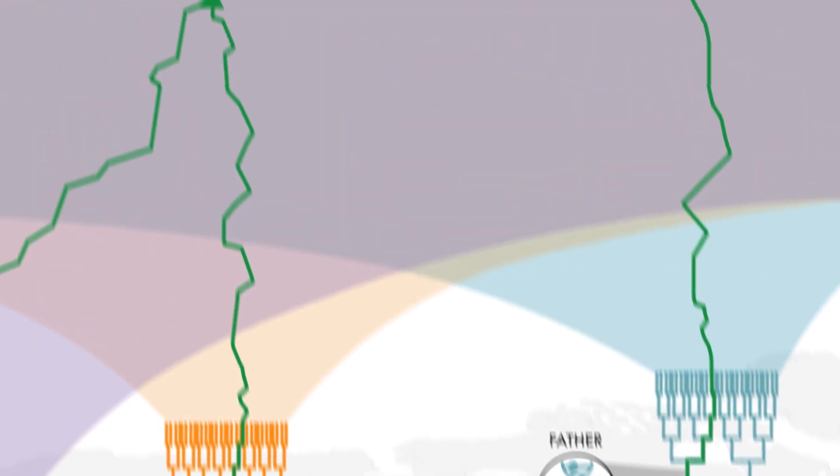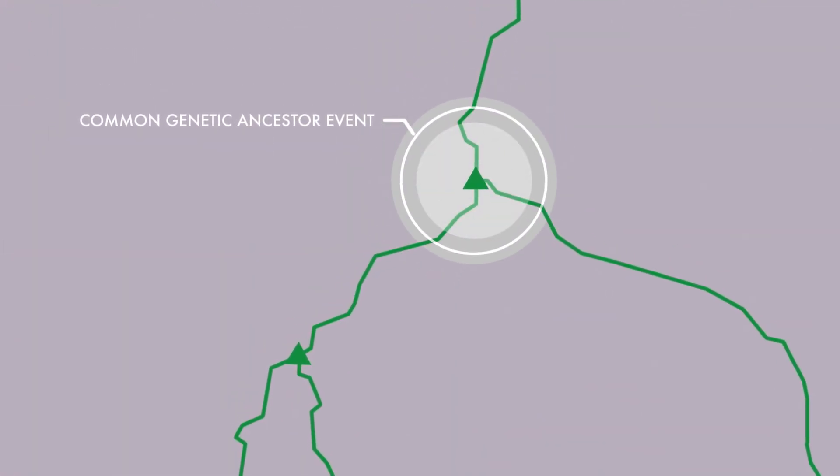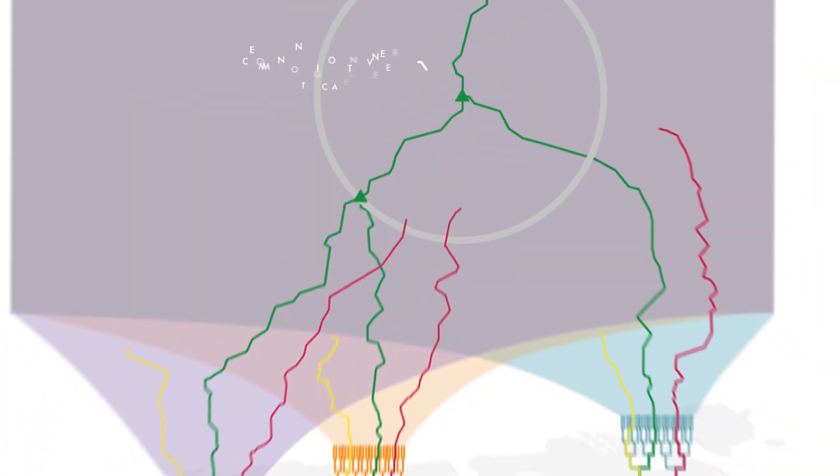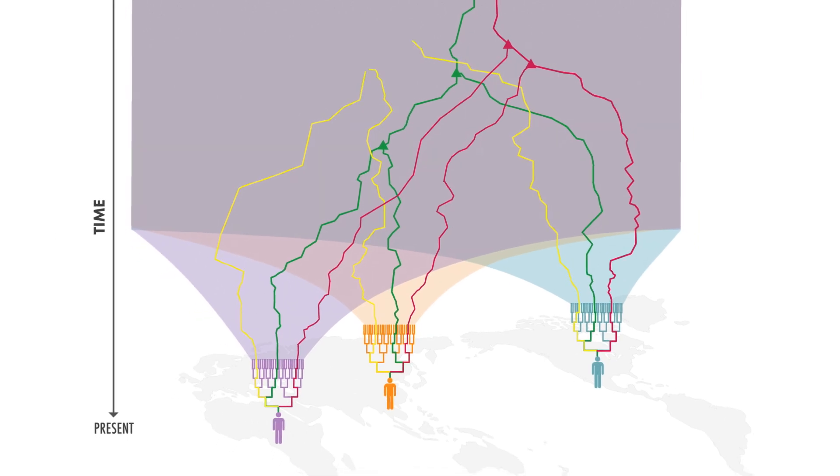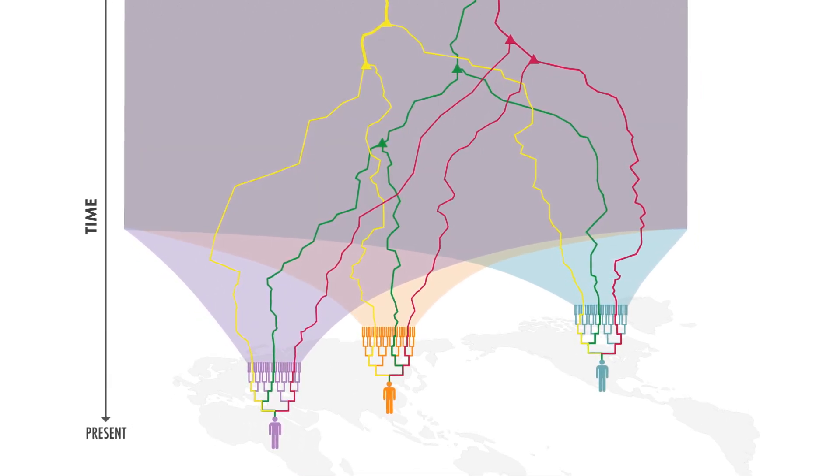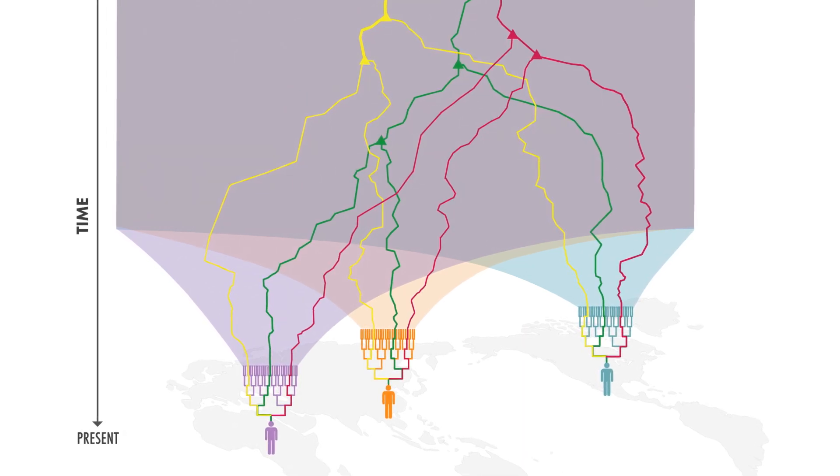We can trace the inheritance of that piece of DNA through different ancestors back in time to form these lines of ancestry. That's what is represented by these yellow, green, and pink lines for three different locations in the genome. One segment of your genome might be inherited down one line of ancestry, another piece down another line, and so on.